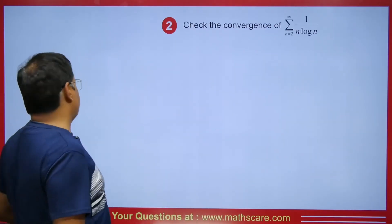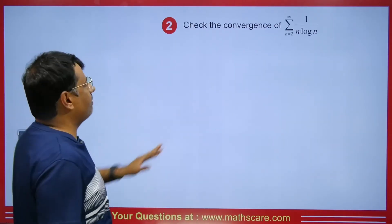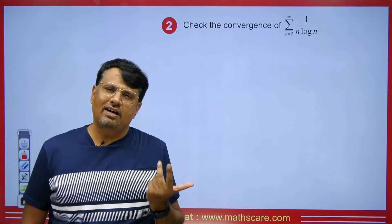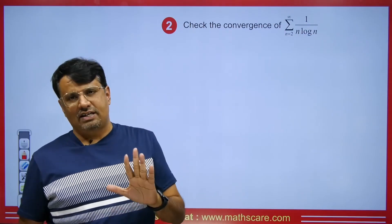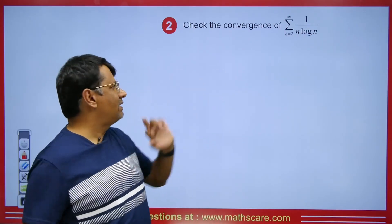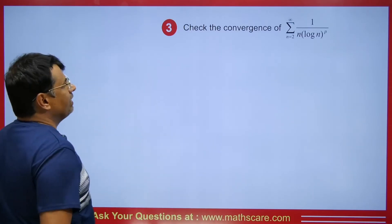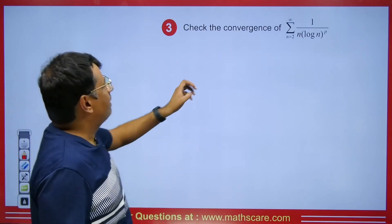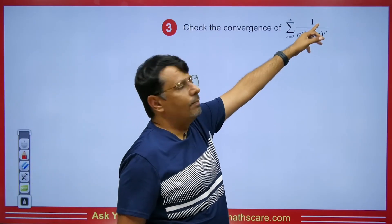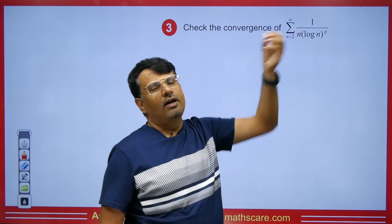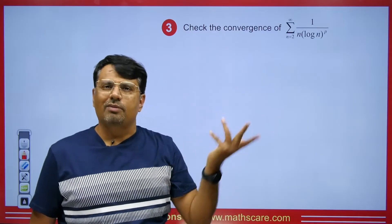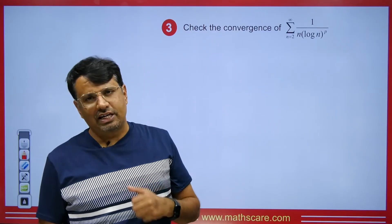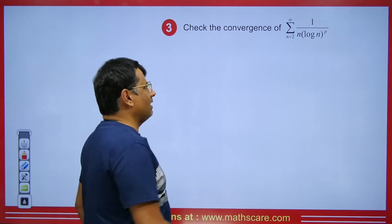This is the same type of question. Here the value of p is 1, so it is divergent. You can easily do it this way. Looking at this question: 1 / (n (log n)^p) is given. We know that for p greater than 1, it is convergent. You can also verify this yourself.